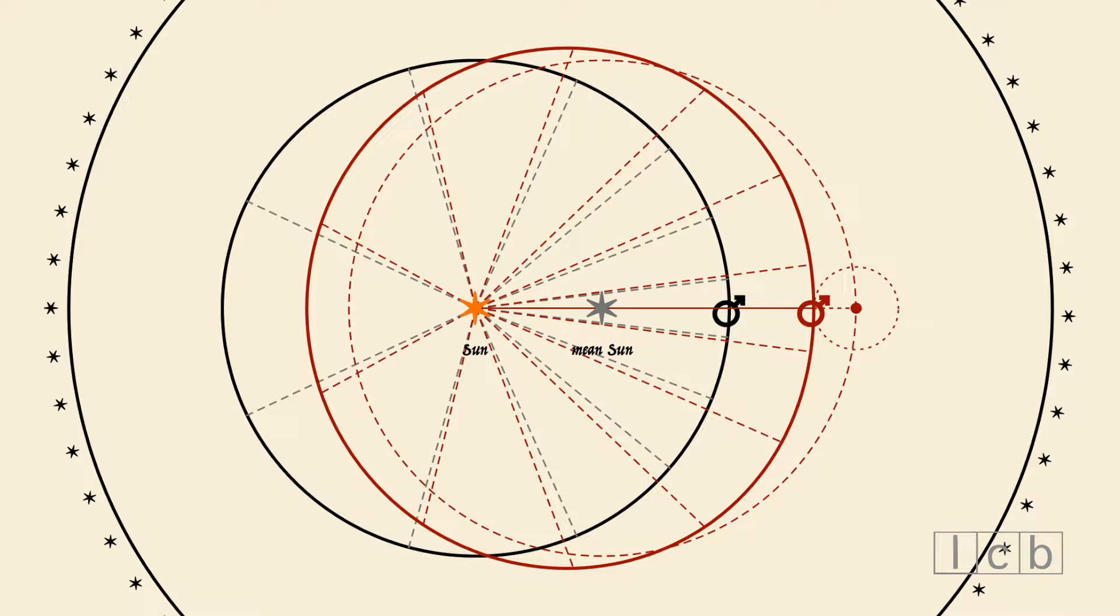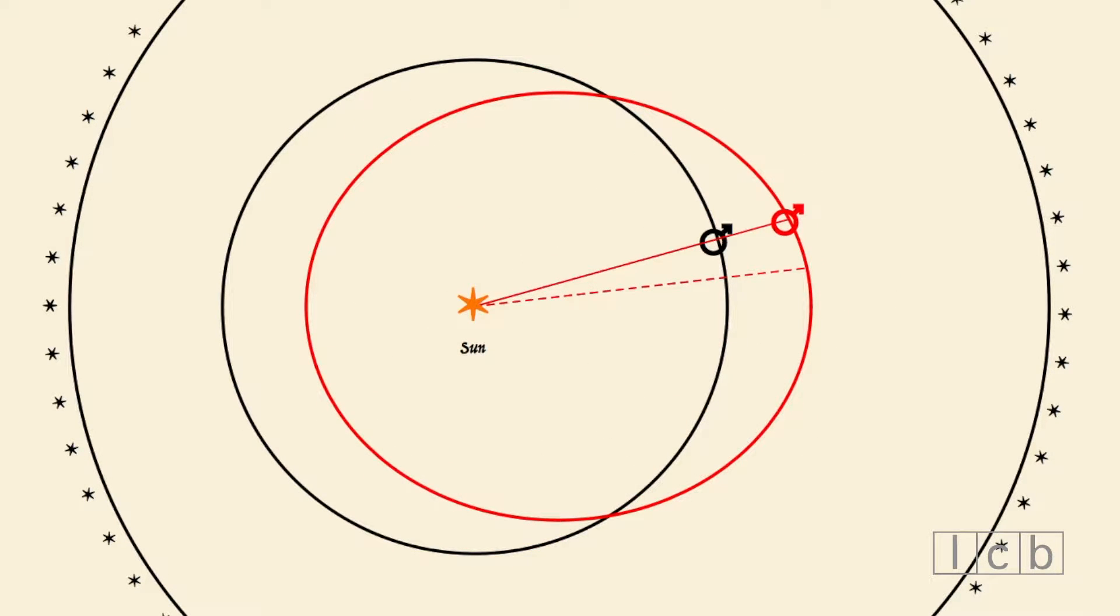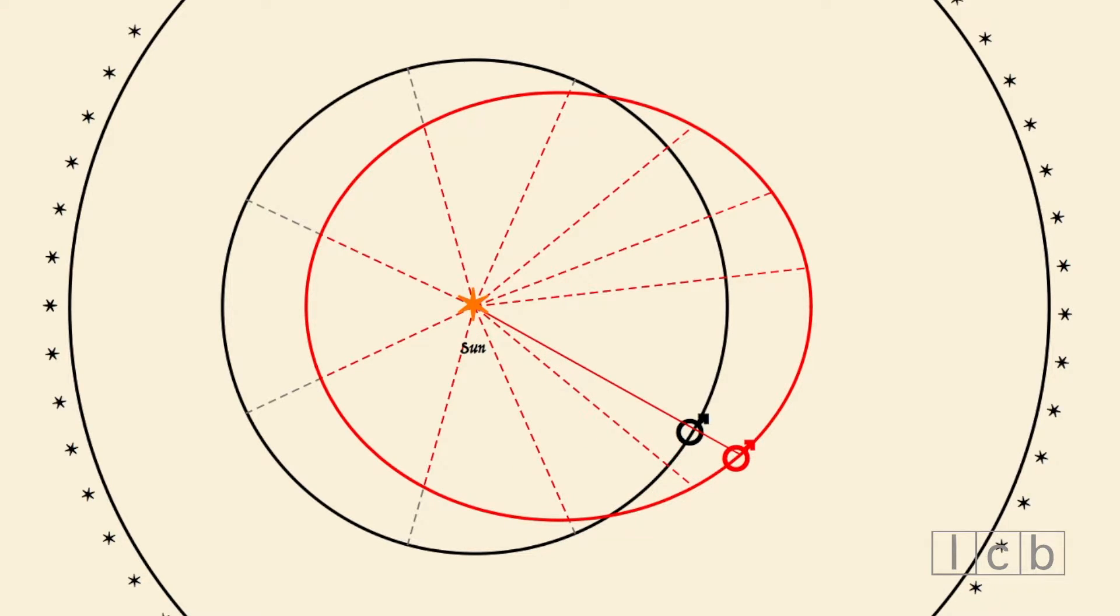This is in good agreement with the observations, good but not perfect. It took all Kepler's genius to discover that if we assume that the orbits of the planets are perfect ellipses with the Sun at one of the foci, traveled in such a way that the line joining the Sun with the planet sweeps out equal areas in equal times, then the agreement is perfect.